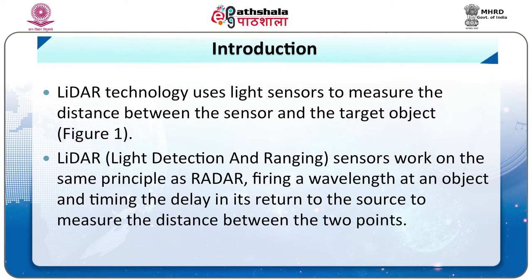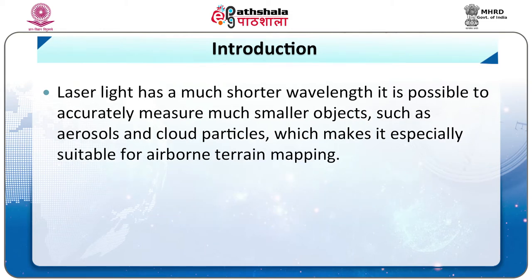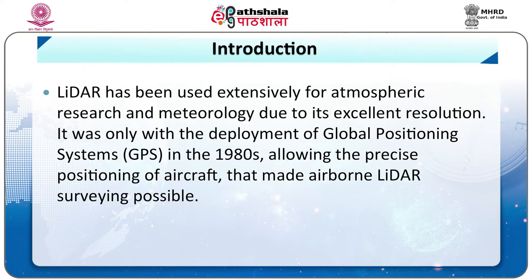LIDAR sensor works on the same principle as that of the radar, firing a wavelength at an object and timing the delay in its return to the source to measure the distance between the two points. Because laser light has a much shorter wavelength, it is possible to accurately measure much smaller objects such as aerosols and cloud particulates, which makes it especially suitable for airborne terrain mapping. LIDAR has been used extensively for atmospheric research and meteorology. It was only with the deployment of GPS in the 1980s, allowing precise positioning of aircraft, that made airborne LIDAR surveying possible. Since then, many downward looking radar instruments have been developed for aircraft and satellite use.